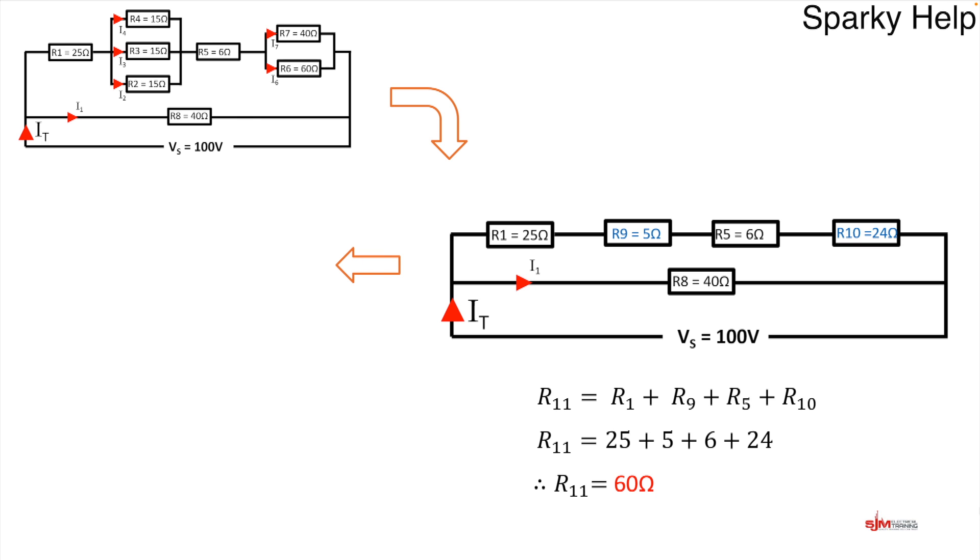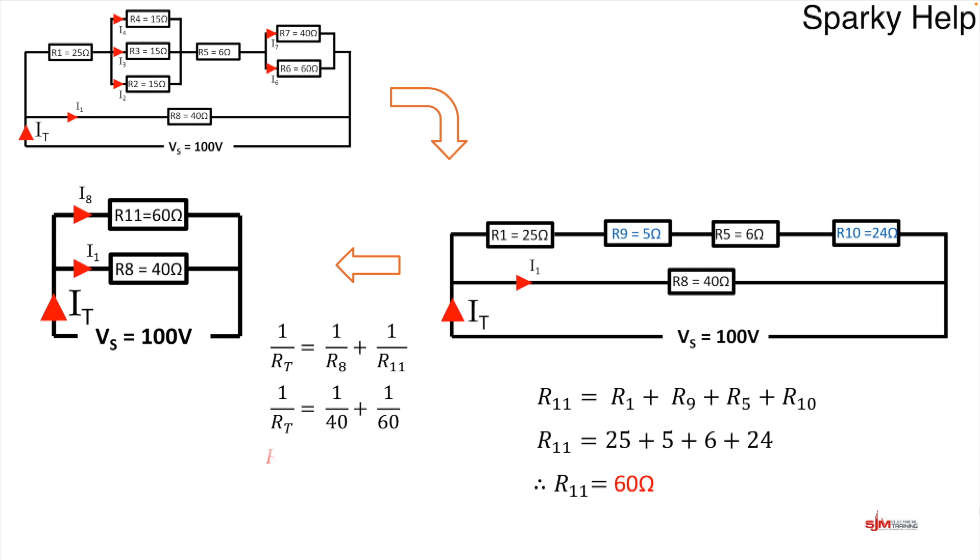What can we now do? We can redraw it again. We've actually converted this from what was above to just two resistors now in parallel. So we're back to a parallel circuit but just two of them. R8 and R11, 60 over 40. Look familiar? Because I6 and I7 and R6 and R7 they were similar as well. So we put those into our calculator and we get an RT of 24.